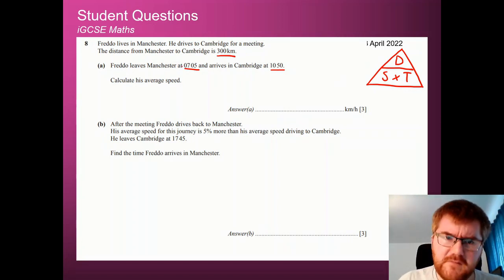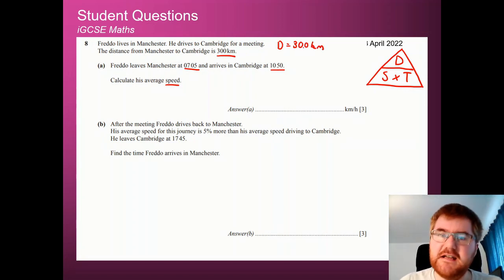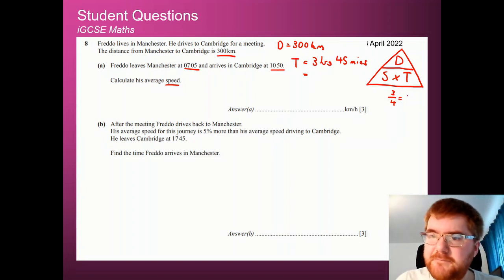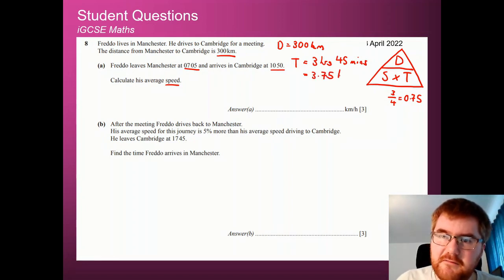So we want to work out the average speed. We have the distance here in the question, so that's 300 kilometres. And now we need to work out the time taken. Well, the time taken between Manchester and Cambridge is going to be equal to 3 hours and 45 minutes. However, before we can use the formula, we need to convert this into just hours. And this is the most important point of the question. So remember, 45 minutes is three quarters of an hour, and three quarters as a decimal, you can check this on your calculator, is 0.75. So the most important thing to do on this question, Sarah, is change this into just hours. So 3.75 hours.